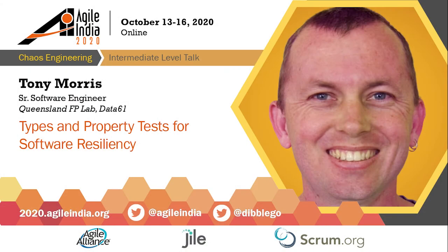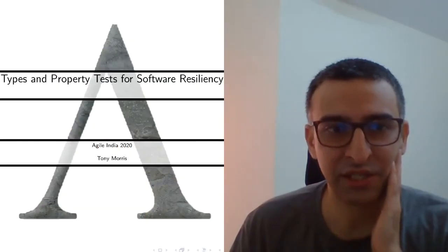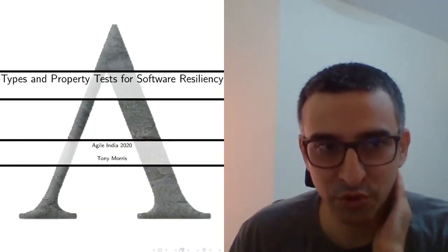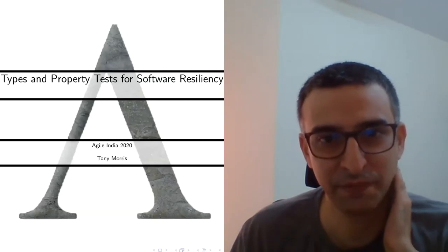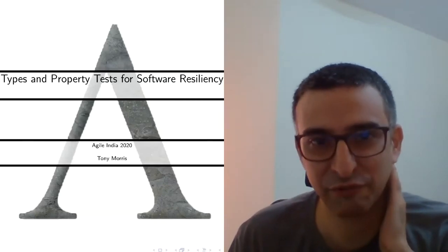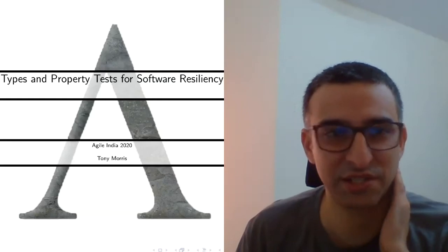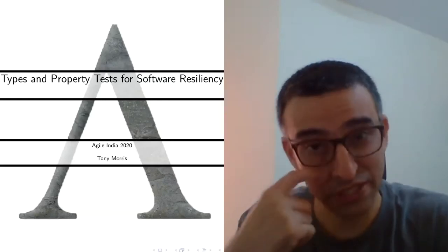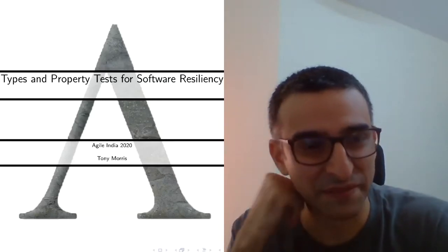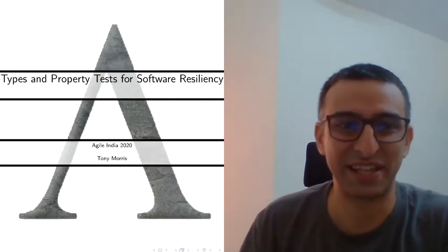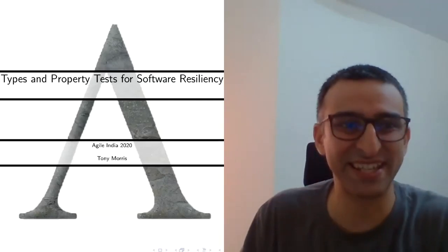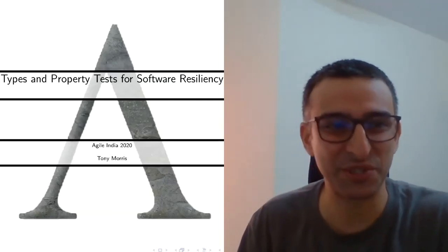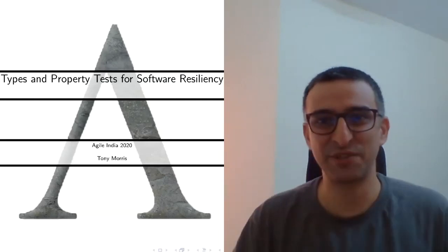Thank you for joining us. We have Tony Morris here. He's here to talk about types and property tests for software resiliency. Tony, for those who don't know, is coming to us from Australia. He is a flight instructor, pilot, and uses Haskell code as well. He does a lot of other things, but I'm going to leave Tony to talk about everything else. Take it away, Tony.